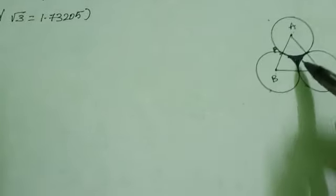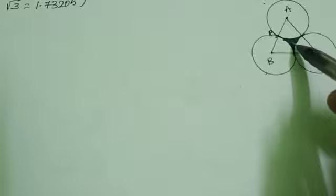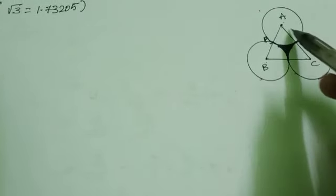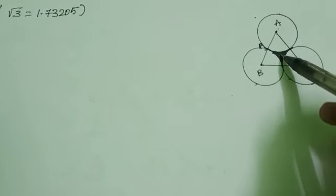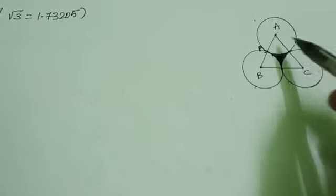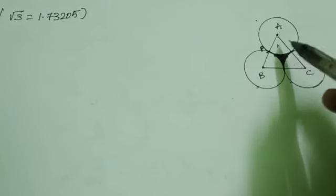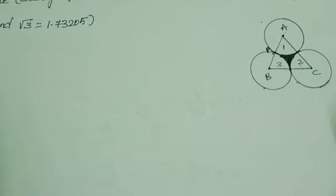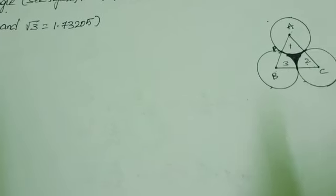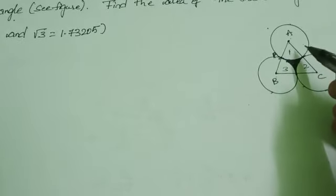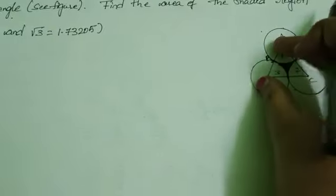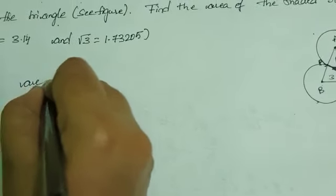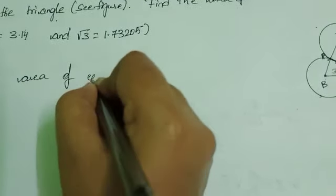Looking at the figure, the shaded region lies between the triangle and the three sectors. So, area of the shaded region equals area of the triangle minus the area of the three sectors — one, two, three. First, we need to find each side of the triangle and the radius of the circles, since these are not yet known. Given: area of the equilateral triangle equals 17,320.5 cm².